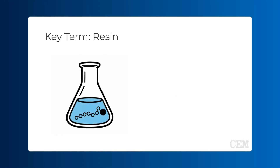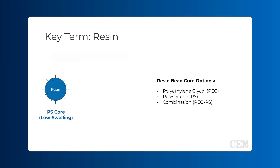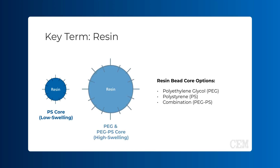SPPS resin beads are insoluble solid supports that anchor a growing peptide chain. A resin's core is typically polyethylene glycol (PEG), polystyrene (PS), or a combination of the two (PEG-PS). Different resin cores have different swelling properties. Low swelling PS resins are a good candidate for simple peptide sequences, while higher swelling PEG and PEG-PS resins are ideal for longer peptide sequences. Consideration of swelling is important for optimizing peptide yield and reducing issues resulting from steric hindrance between growing peptide chains.